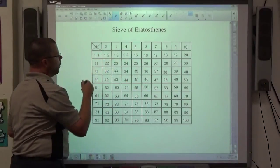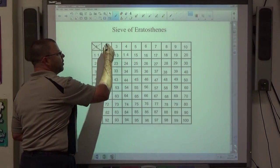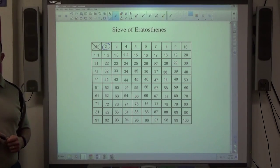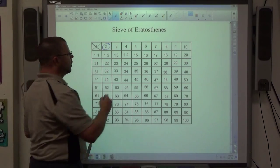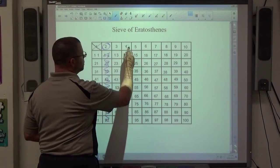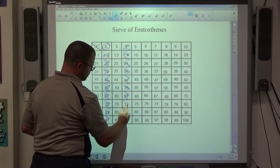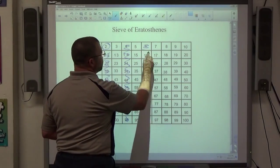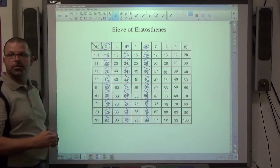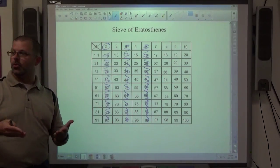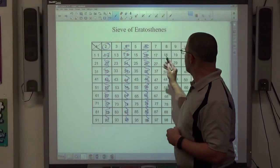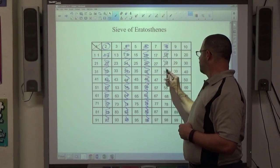The way the Sieve of Eratosthenes works, once we throw out 1, whatever the first number we get to, which is 2, is a prime number. And then we strike out every multiple of 2 after that. So all the even numbers after 2 can divide by 2. Why are we striking them out? Because they divide by 2, they're not prime.